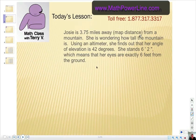Here's the question. Josie is 3.75 miles away, which is horizontal map distance from a mountain. She's wondering how tall the mountain is. Using an altimeter, she finds out that her angle of elevation looking up to the peak of the mountain is 42 degrees.